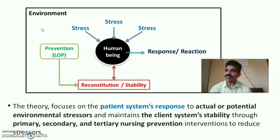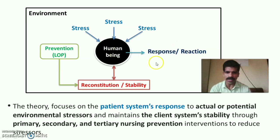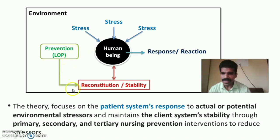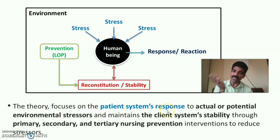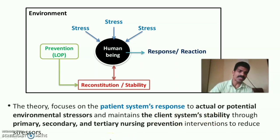In brief, the Neuman system model states that every individual is surrounded by an environment and influenced by various stressors. Human beings may react to these stresses, and the resulting problems can be addressed through levels of prevention — primary, secondary, and tertiary — for the reconstitution and stabilization of the person. The theory focuses on the patient system's response to actual or potential environmental stresses, and the client maintains stability through application of preventive nursing interventions.